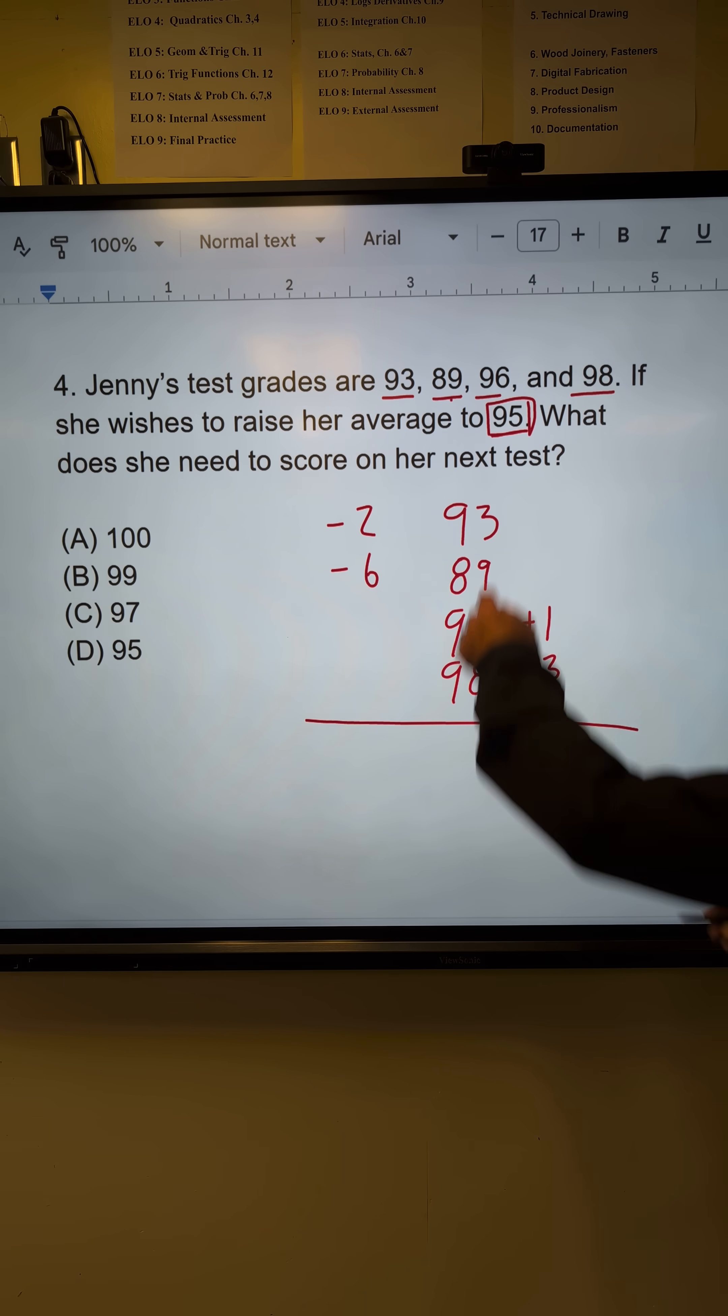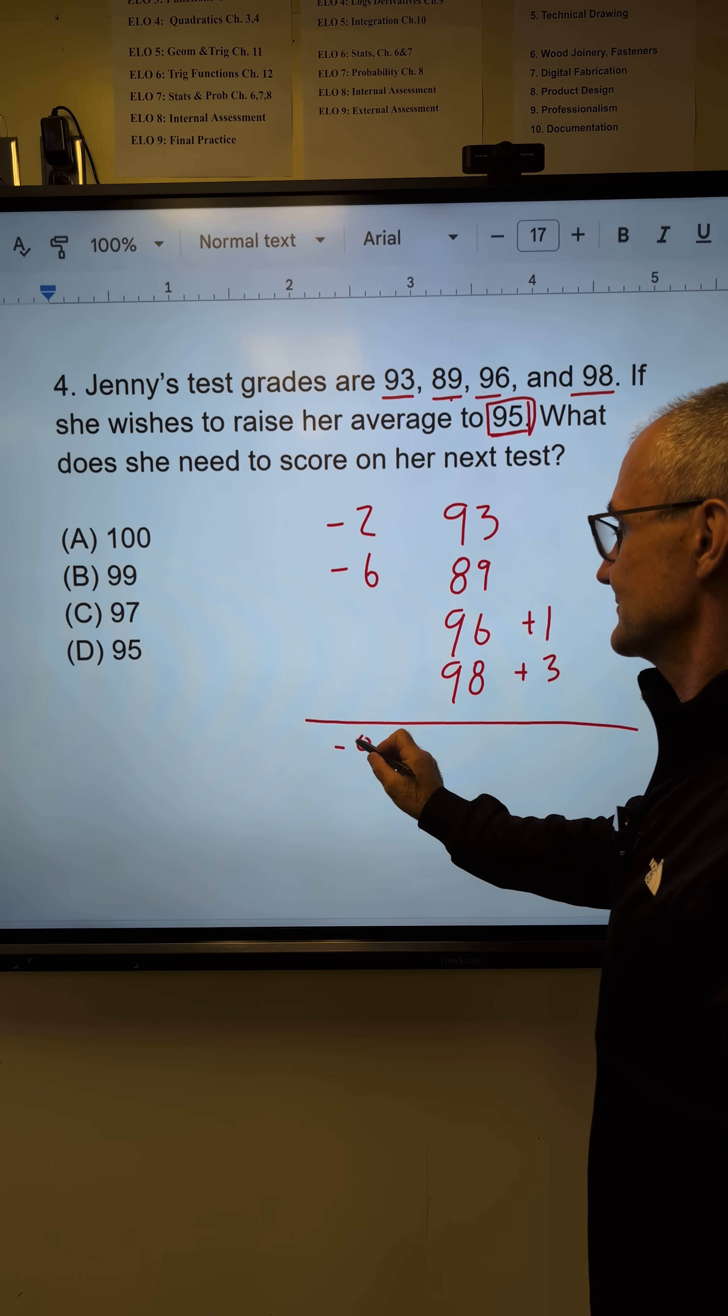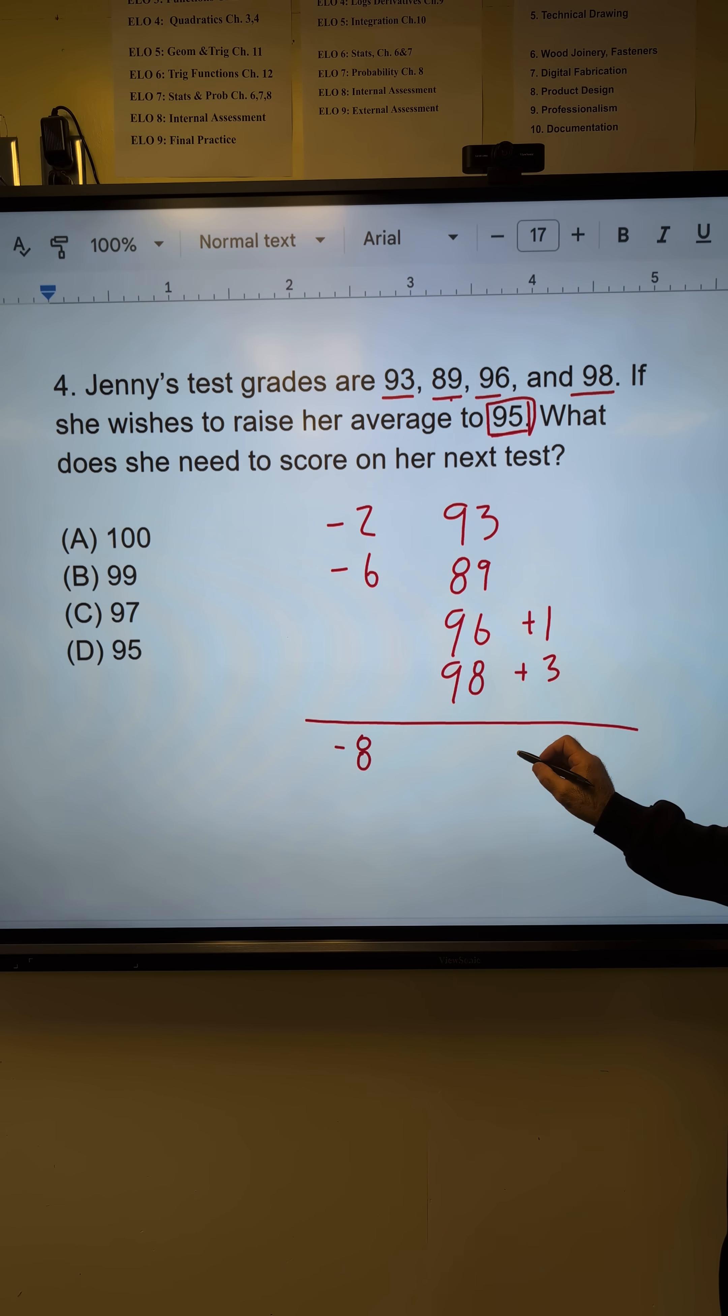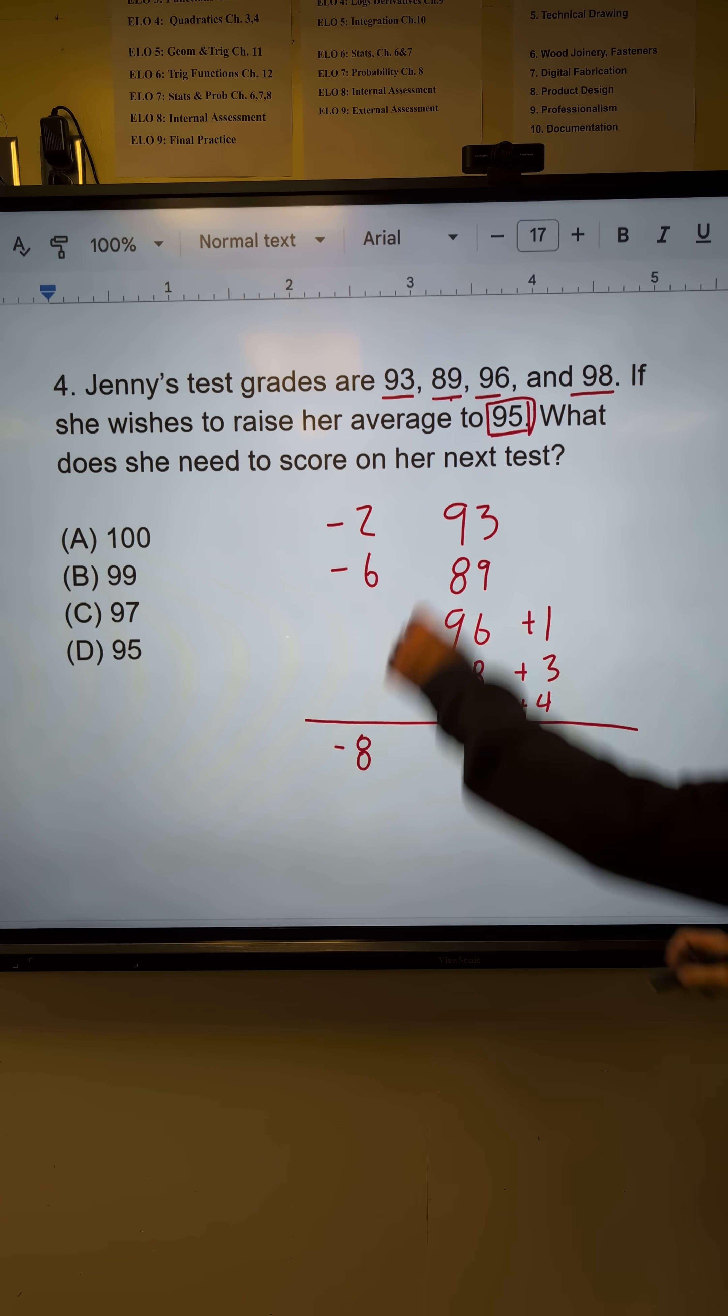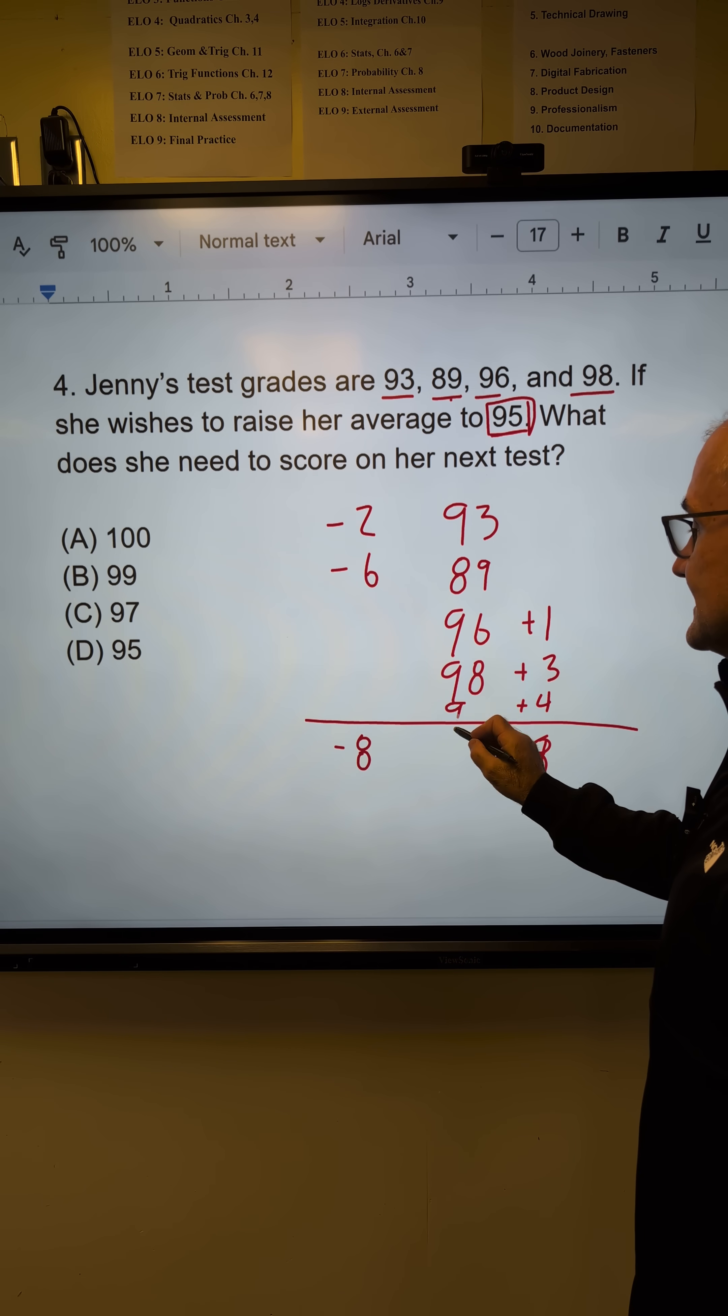I know my average I'm looking for is 95. This adds up to 8 under. This right here adds up to 4 over. So I need this fifth score right here. It has to be 4 more to give me 8, to give me that average of 95. Well, 4 more of 95 is 99.